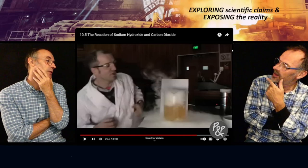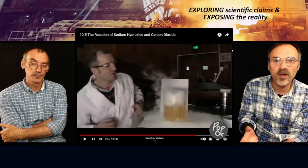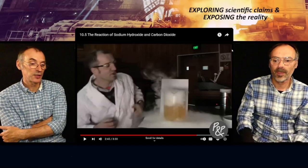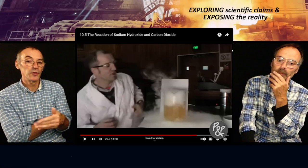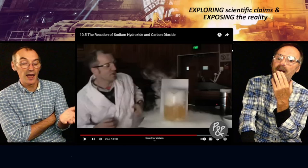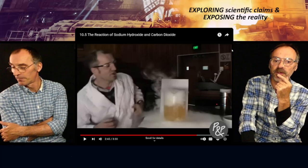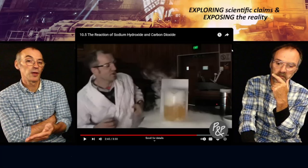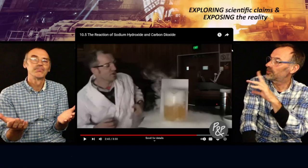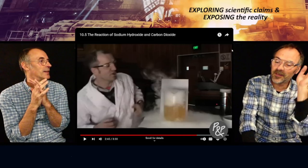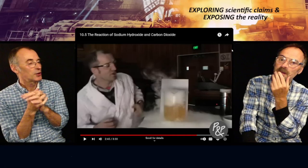He said 'you can see the chemistry' when he puts in the dry ice, but all he wanted to show people is the change in color, the change in pH - nothing to do with the reaction of the sodium hydroxide and the dry ice. Even the title of the video is 'the reaction of sodium hydroxide and carbon dioxide.' So where was the sodium carbonate then? Because that's what should have been formed. Sodium carbonate is an alkali, it's not an acid, so it shouldn't really have gone yellow.